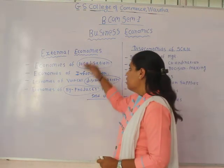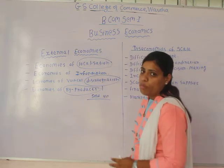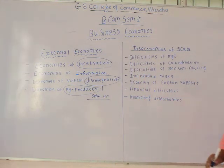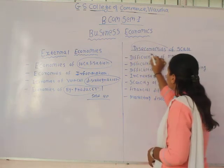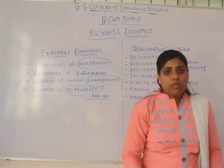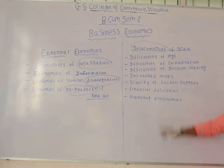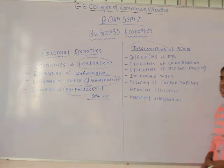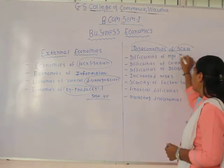So these are the various reasons for external economies of scale. Now we will move towards the diseconomies of scale. The meaning of diseconomies is disadvantages or demerits, and scale means large-scale production. Just as there are certain advantages available when production size expands, certain disadvantages are also faced when output or the size of firm is expanded.